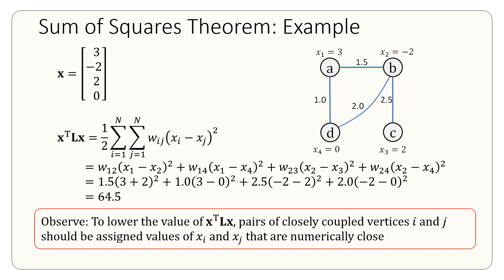Now observe that to lower the value of x transpose Lx, we can take pairs of closely coupled vertices i and j and assign them xi and xj that are numerically close to one another. For instance, take this example b and c. We have assigned them very different values. x2 is negative 2 and here x3 is 2.